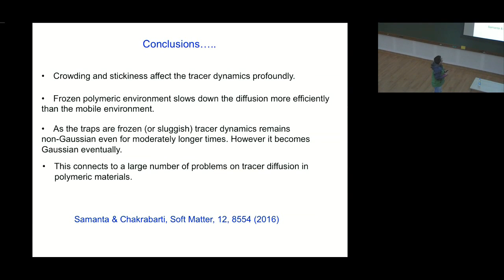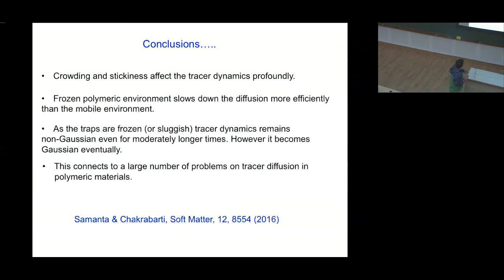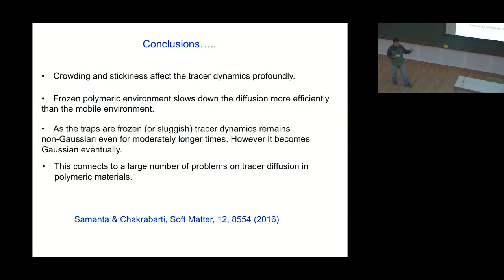To conclude: if you have more and more polymer or make it more and more sticky, the dynamics becomes slow and eventually sub-diffusive. If the polymeric environment is frozen it is even more sub-diffusive compared to a mobile polymeric environment. The sticky zones of the polymer act as traps, keeping the tracer dynamics non-Gaussian for moderately long times. During the experimental time scale you may not see the crossover to Gaussian because the time scale is not long enough, but eventually everything should become Gaussian.